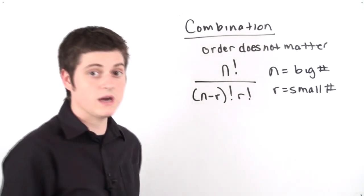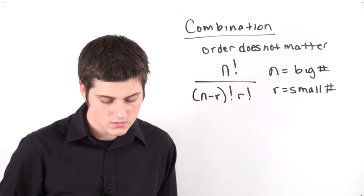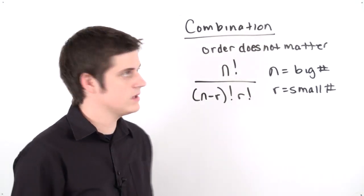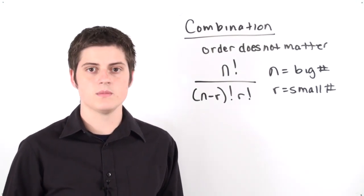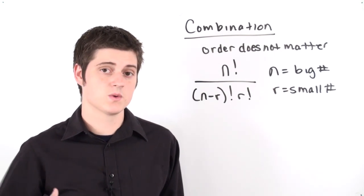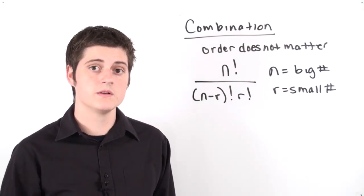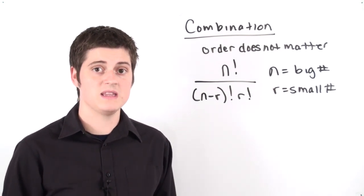If you do it the other way around, you're not going to get answers that you want. So whenever we're applying this, a good example of a combination is going to be the lottery. Let's say you're playing the lottery, you pull five numbers, and as long as your five numbers match the winning five numbers in any order, you still win the money. It doesn't have to be in the exact order.